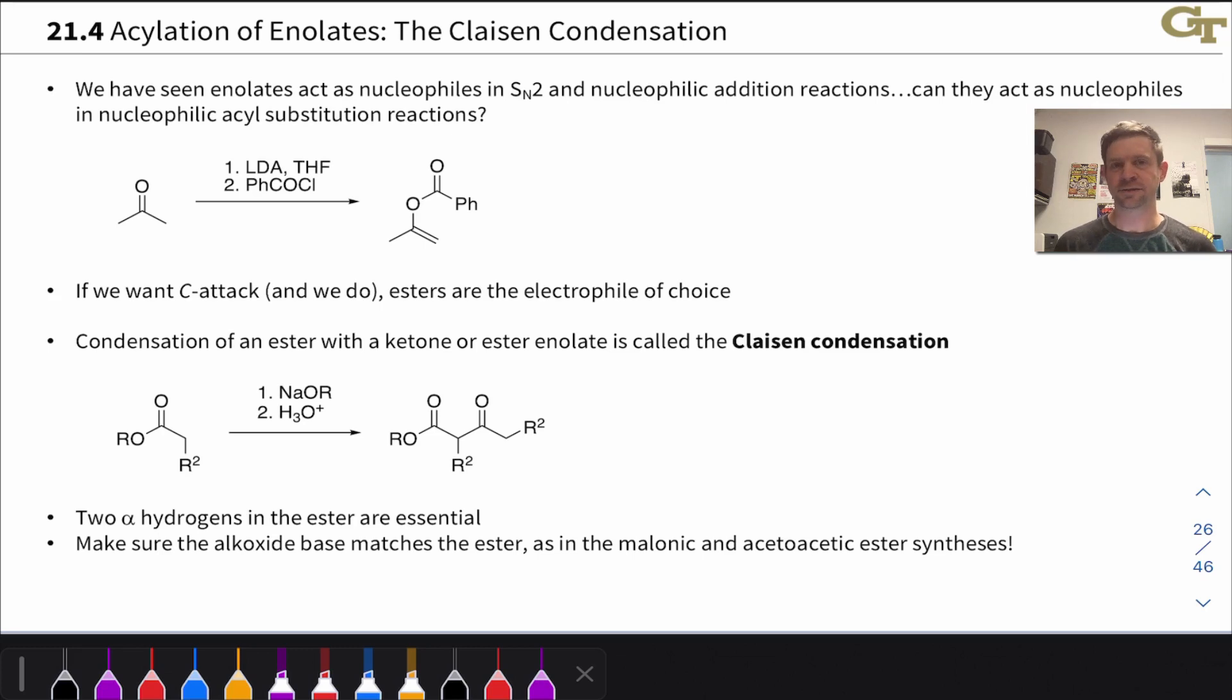Enolates can do a lot of things as nucleophiles. They can react with halogens just like aromatic rings, be alkylated just like cyanide and alkoxides in the SN2 reaction, and react with other carbonyl compounds in nucleophilic additions. That's what we've called the aldol reaction.